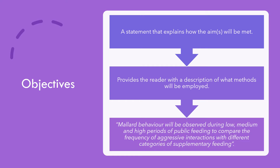Next, we come to the objectives of our study. The objective is often confused with the aim, but it's quite different. The objective explains how you intend to meet your aim — what will you do that shows the reader how you have fulfilled the aim of your research? It provides the reader with a description of what methods will be employed, because the methods are how you are going to work out whether or not you've actually met your aim. So going back to the duck project, the aim is to see whether or not feeding the ducks increases aggressive behaviour.